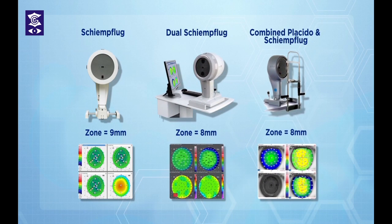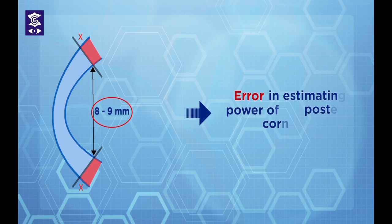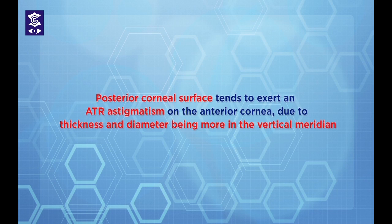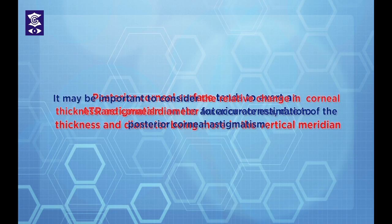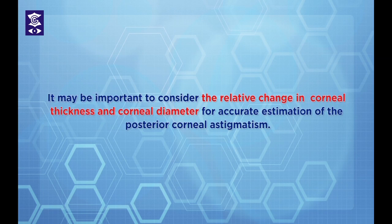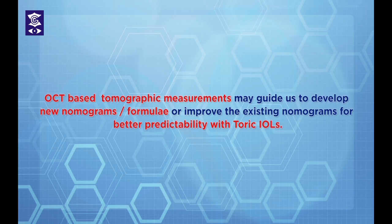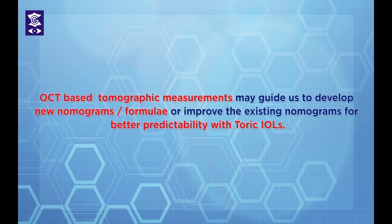Last but not least: why may topography or tomography not be ideal for measuring posterior corneal astigmatism? Modern tomographers, although more precise than keratometry, are unable to measure peripheral corneal thickness beyond 8 to 9 millimeters, which may potentially lead to errors in estimating the power of the posterior cornea. To summarize, it may be possible that the posterior corneal surface tends to exert against-the-rule astigmatism mainly due to thickness and diameter being greater in the vertical meridian. Hence, considering the relative change in corneal thickness and diameter for accurate estimation of posterior corneal astigmatism is important, and OCT-based tomographic measurements may guide us to develop new nomograms or formulae — or improve existing ones — for better predictability with toric IOLs.